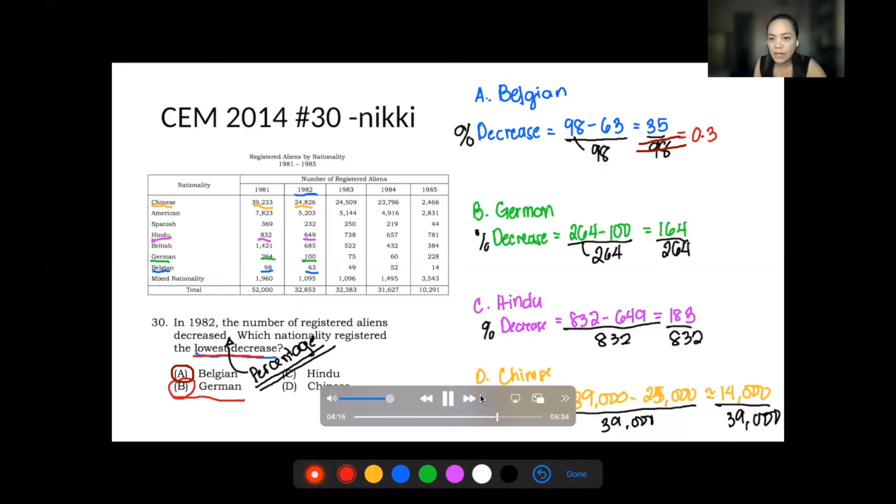For Belgium, that's around 36%. For German, that's around 62%. For Hindu, 183 divided by the previous value, which is 832.